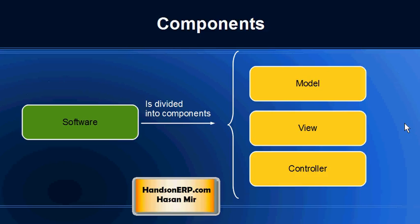The MVC model calls for the division of a software or application into three main components: Model, View, and Controller.